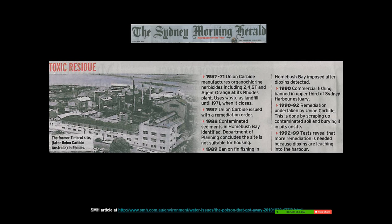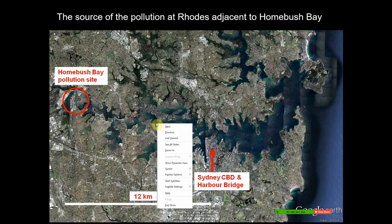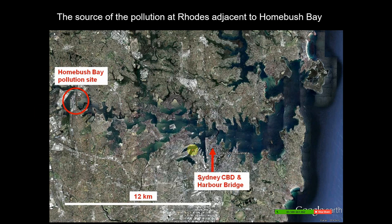The site was closed down in the 1980s and then there was a big cleanup effort. To give you context: Sydney Harbour is shown with the Sydney CBD and Harbour Bridge in the middle. Homebush Bay is a pollution site about 12 kilometres upstream from the CBD — from Circular Quay and the Harbour Bridge. So upstream about 12 kilometres is Homebush Bay.